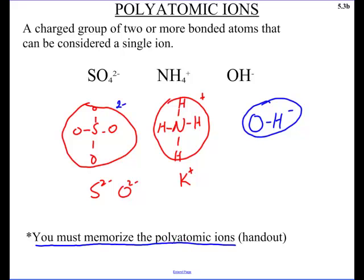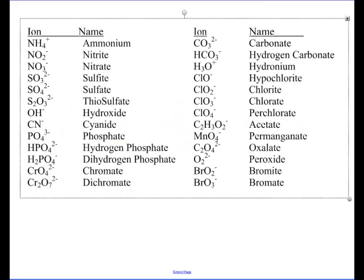I'm not a huge fan of memorizing, but the problem is, in order to speak like a chemist, you've got to know the words. And it's no different than a foreign language class, where you've got to learn some of the basic root words in order to speak it. So we've got to learn these polyatomic ions. And I'll give you a handout, but here it is. Look at those. I believe there's 26 there.